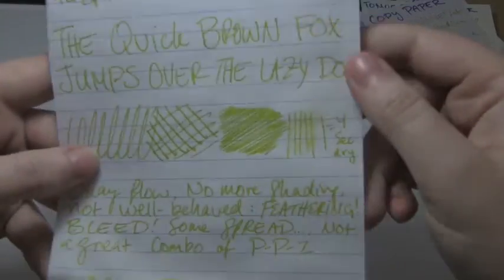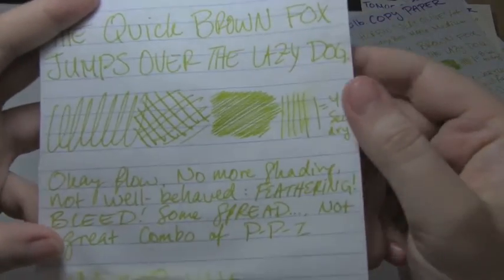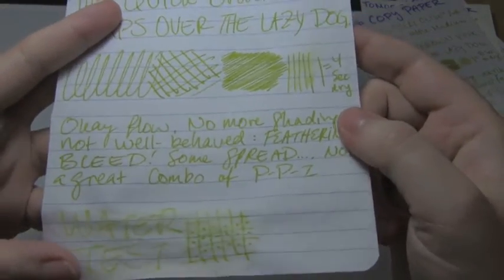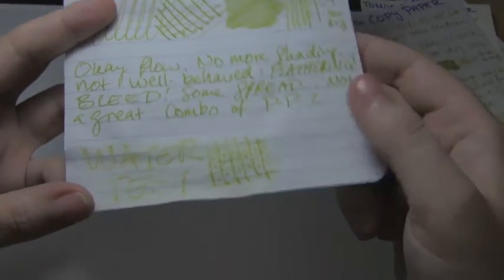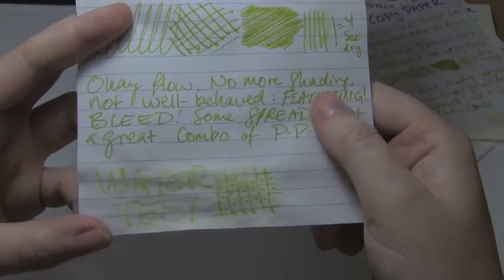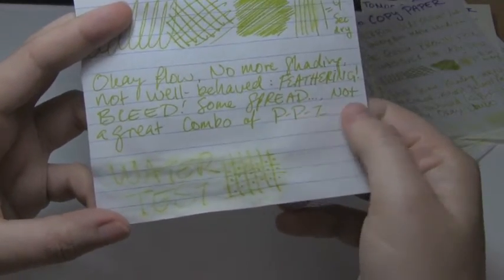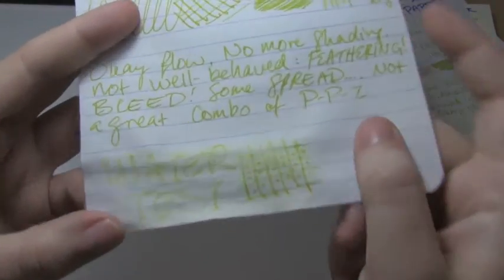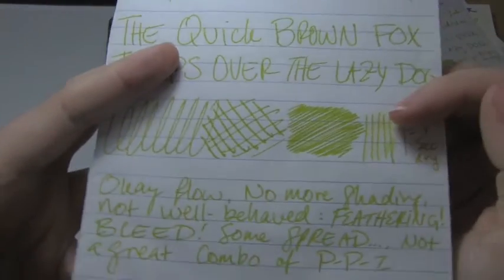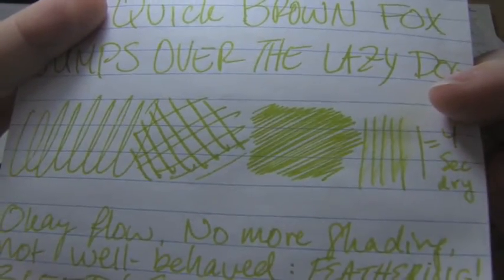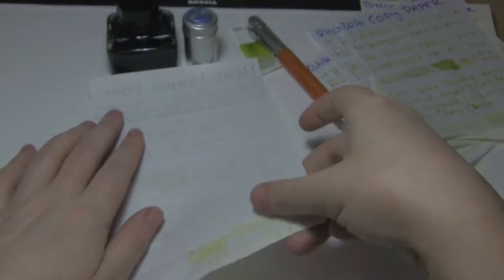Next is notebook paper, where it pretty much just turned yellow. I would call this like a dark yellow. Bleed, feather, spread, bad pen, paper ink combo, water test was a mess. Really, really feathery, and hazy, and wooly, and it bled through. I mean, the reason why this doesn't look worse is just because of how light the ink is. So, need notebook paper.